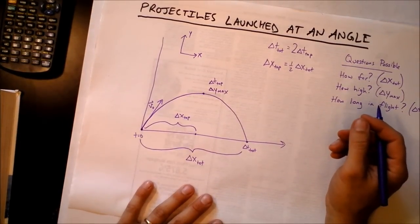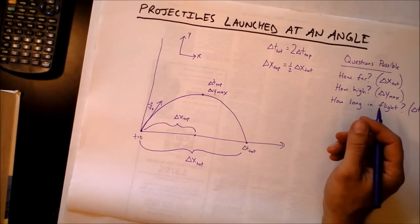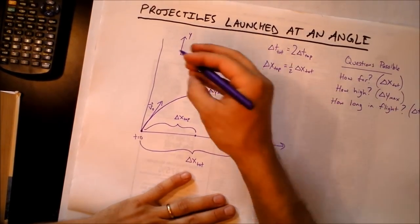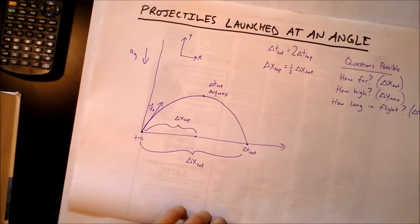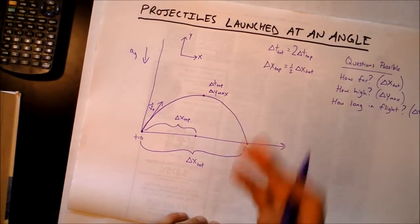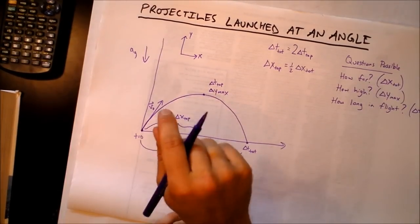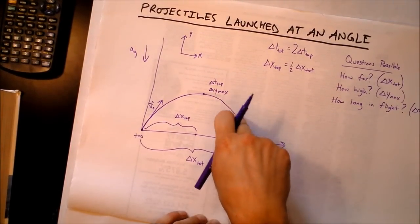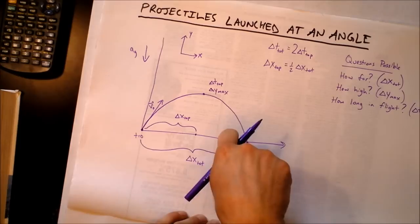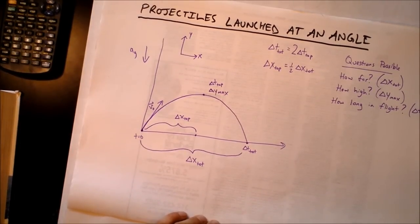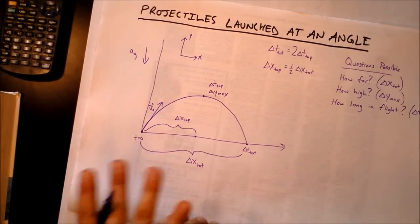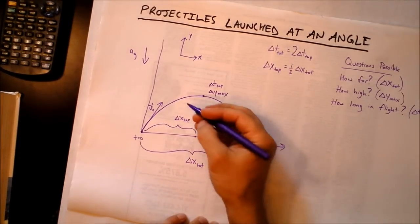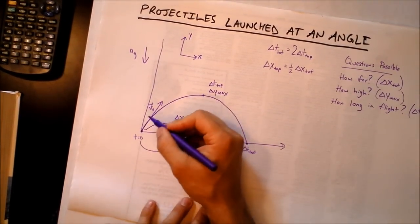There's steady motion in one direction and accelerated motion in the other direction. We're going to just label up here that the acceleration of gravity is pointing that direction, so that means that there's no acceleration in the x direction. That means there's no air resistance.